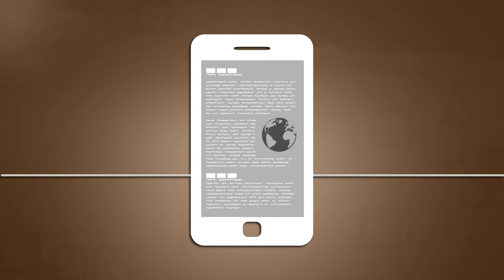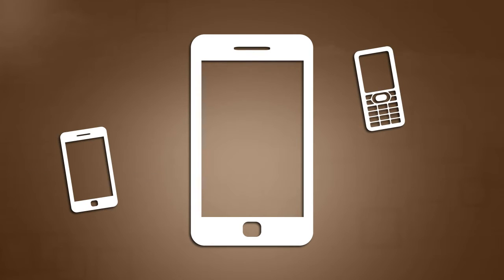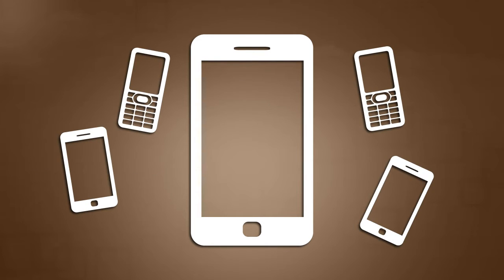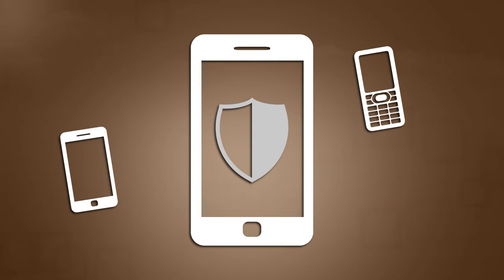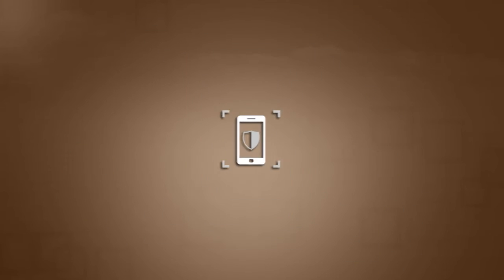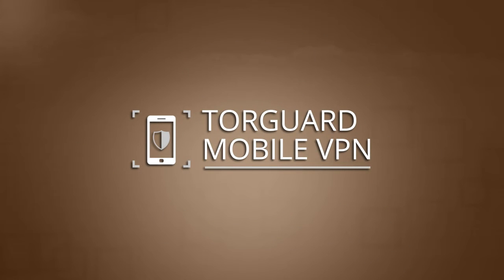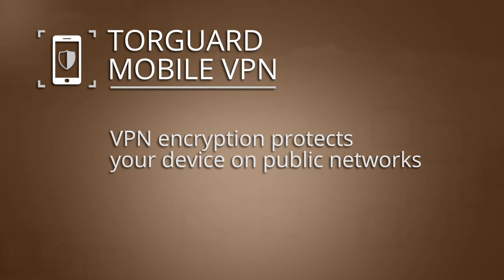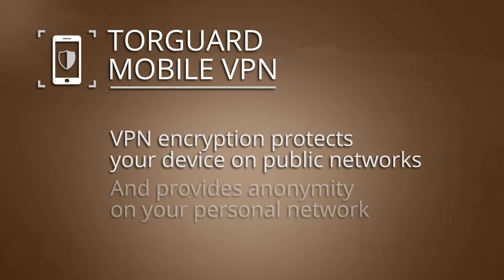As we become increasingly dependent on mobile devices, it is important to continue to be protective of our private data. With TorGuard Mobile VPN, you can connect your mobile device to any Wi-Fi network without fear of anyone eavesdropping on your usage or stealing your personal information. The same VPN encryption that protects you at public Wi-Fi hotspots can also provide anonymity and privacy from your internet service provider.